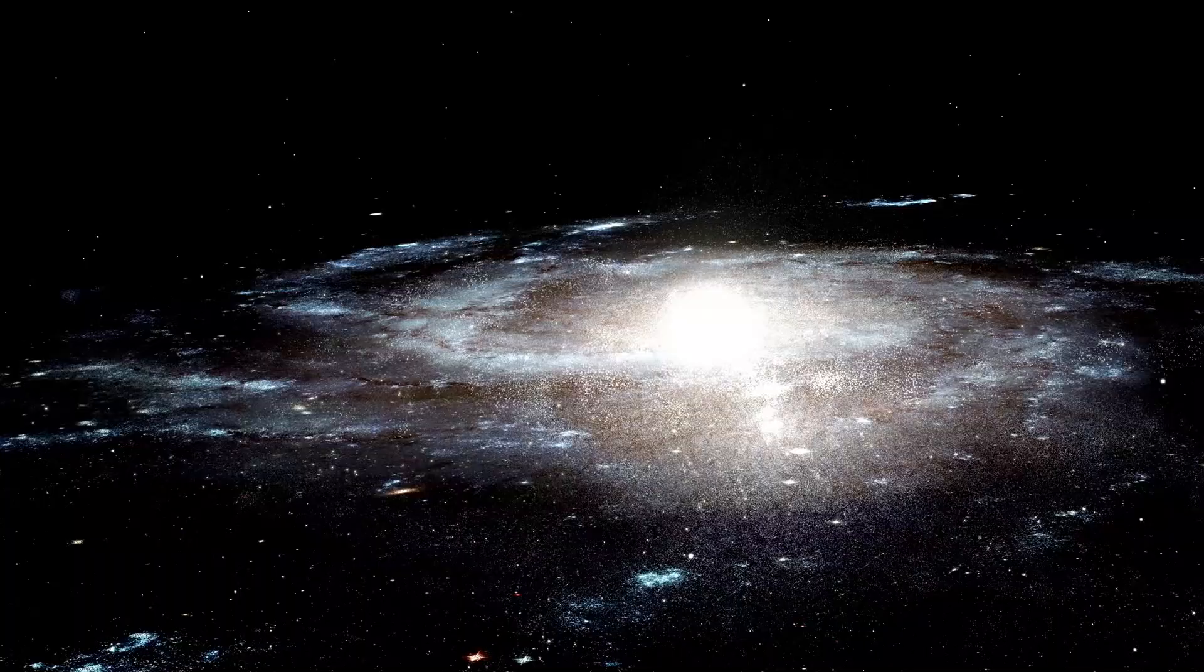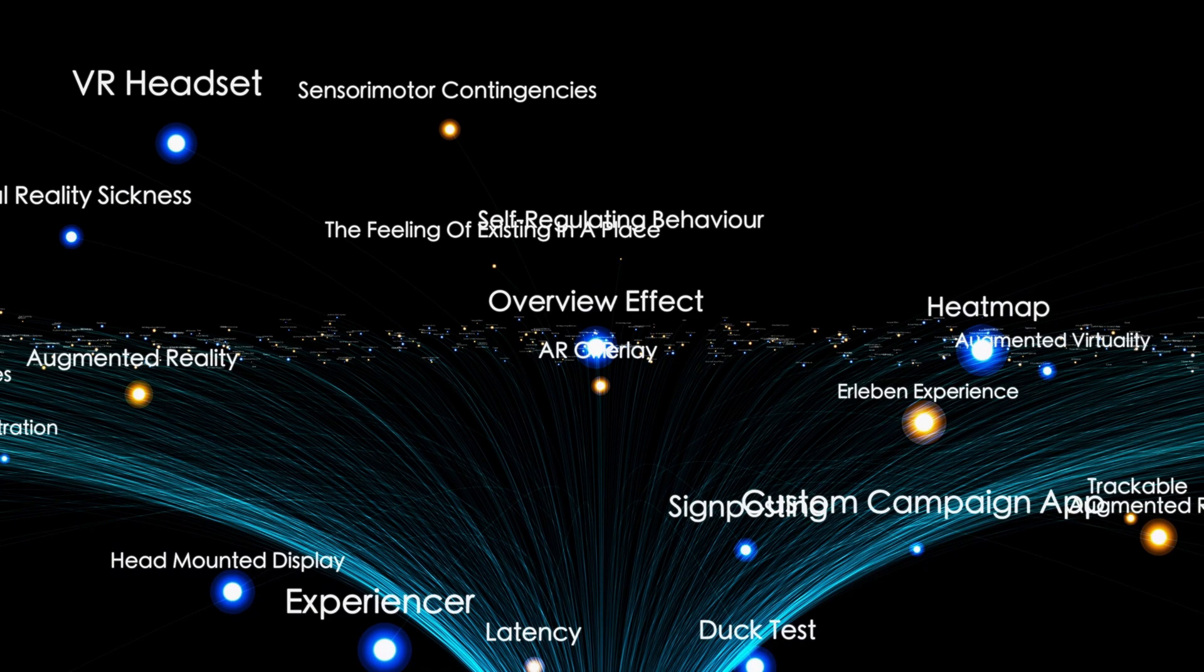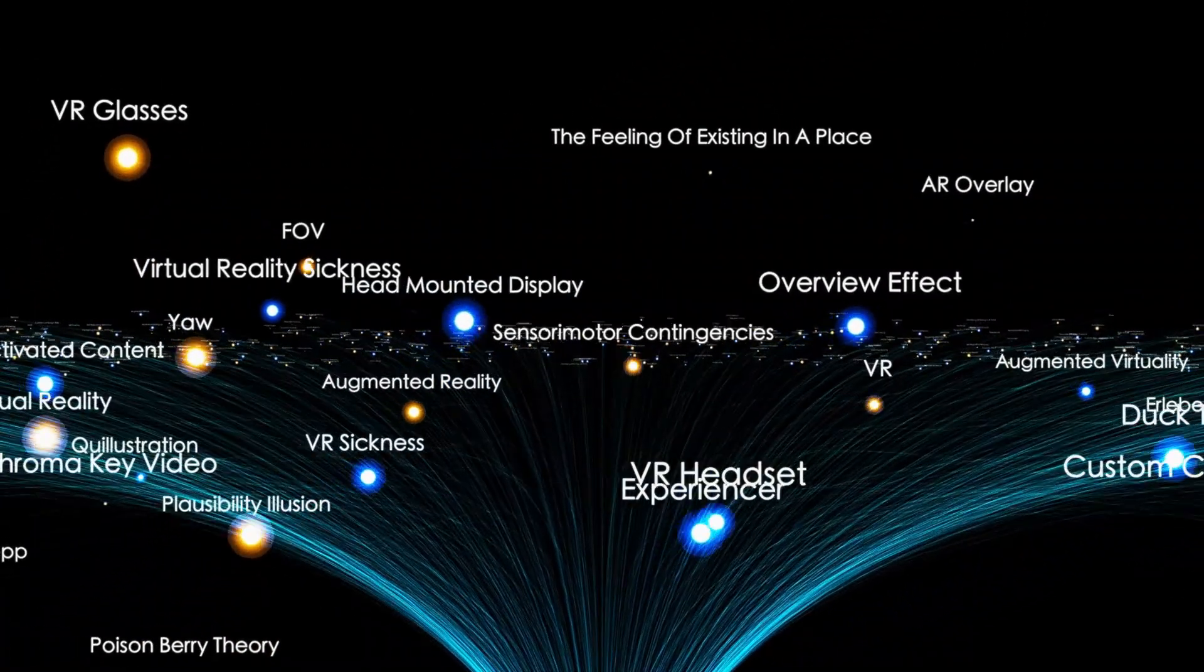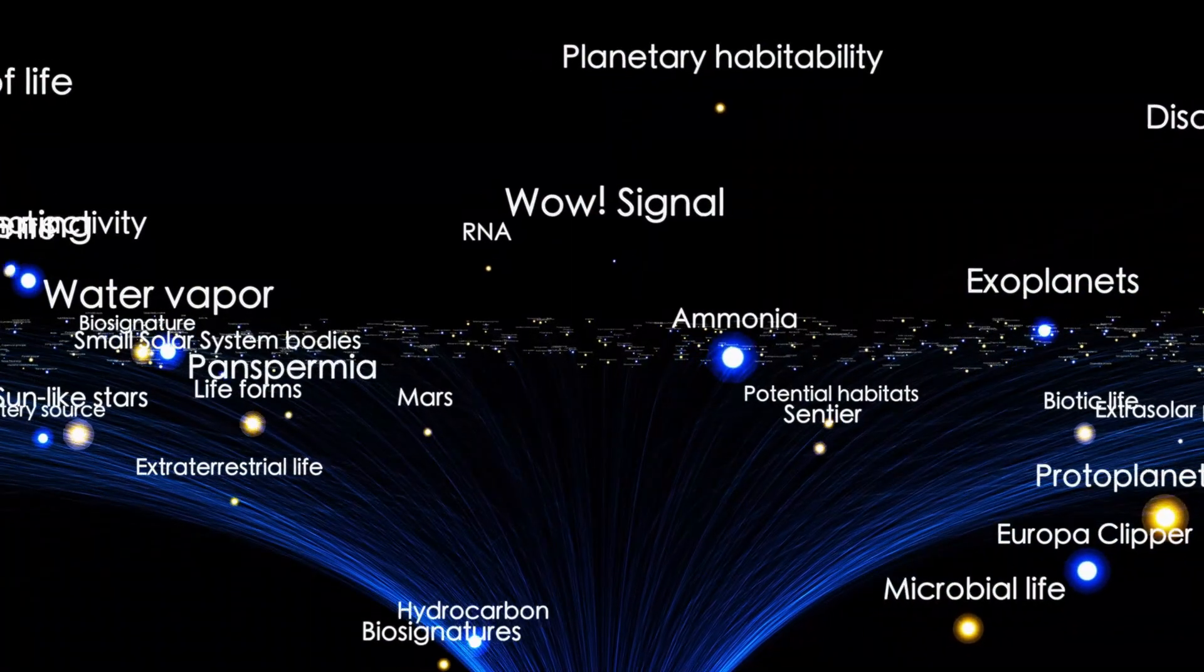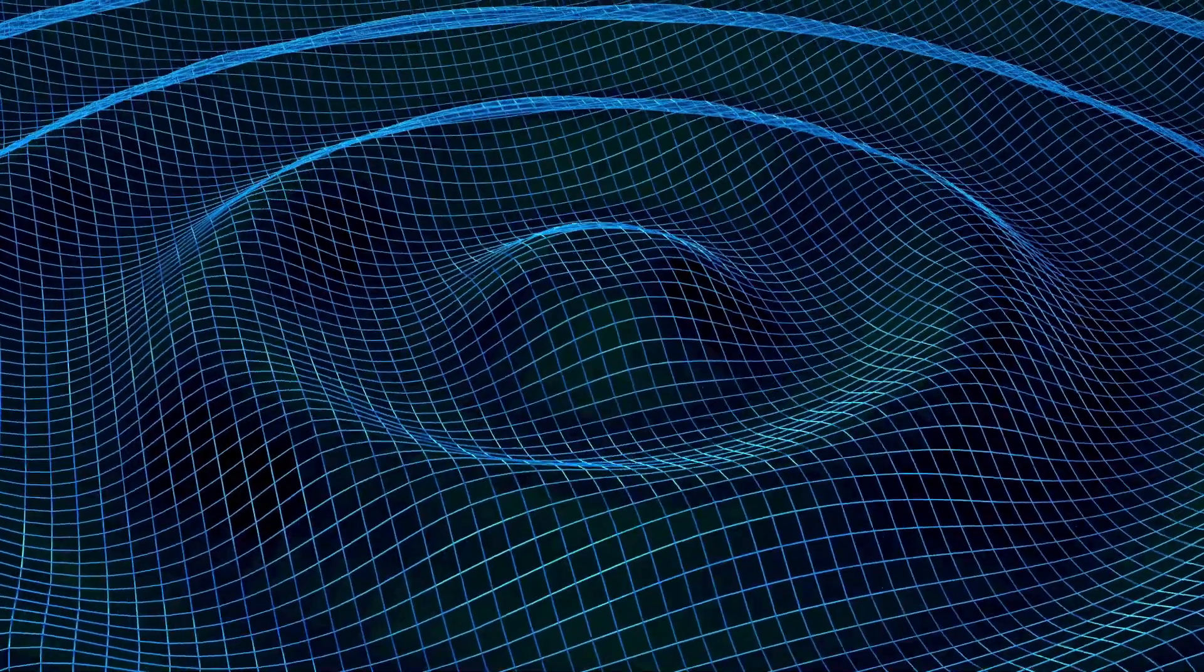While cosmology provides scientific models to explain these cycles, philosophical questions remain, such as how these cycles began and why anything exists at all. These are profound, metaphysical questions that reach beyond physics. Nonetheless, within the physical sciences, three possibilities arise regarding the origin of cosmic cycles.